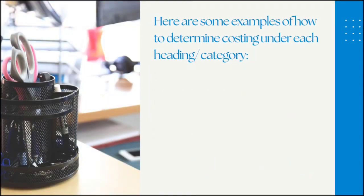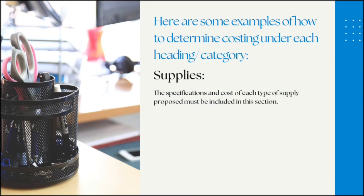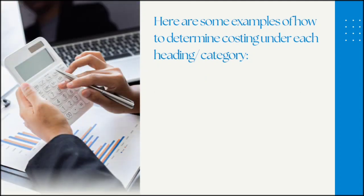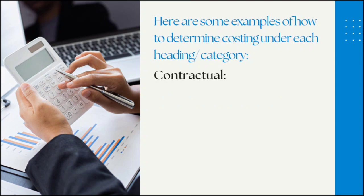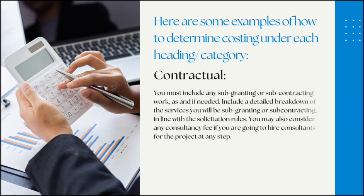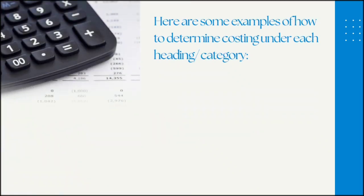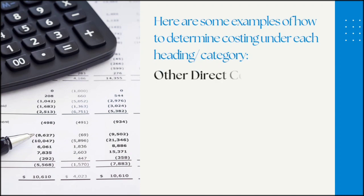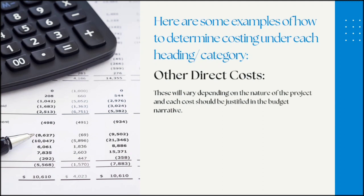Item 5: Supplies — the specifications and cost of each type of supply proposed must be included in this section. Item 6: Contractual — include any sub-granting or sub-contracting work as and if needed. Include a detailed breakdown of the services you will be sub-granting or sub-contracting in line with the solicitation rules. You may also consider any consultancy fee if you are going to hire consultants for the project at any step. Item 7: Other direct costs — these will vary depending on the nature of the project and each cost should be justified in the budget narrative.